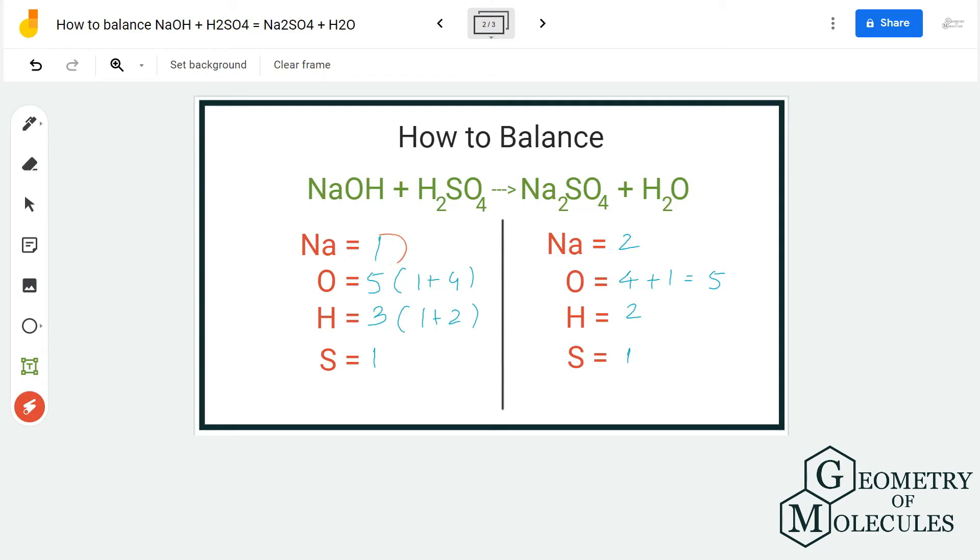So now you can see here that on the reactant side we only have one atom of sodium, but there are two atoms of sodium on the product side. So we need to first balance that. What I'm going to do is I'm going to place 2 over here.